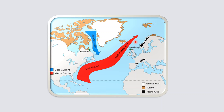In the same latitude we find very great temperature differences, mainly because of the presence of the warm current along the western coast of Europe and the presence of the cold current along the eastern coast of Canada.